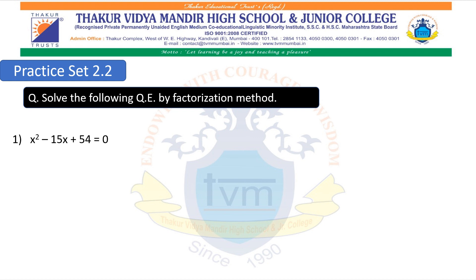If it is in standard form, what we will do is take the quadratic term and the constant value and multiply them. In this sum, the quadratic term is x squared and the constant term is plus 54. After multiplying these two terms, we will get plus 54x squared. Now, this plus 54x squared we have to split into two parts such that when we multiply, it should give 54x squared, and when we add, it should give 15x.